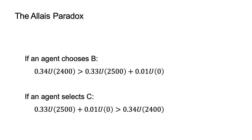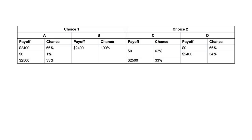Why does this occur? What axiom is being breached? To understand this, I will show you another representation of the choices in this table. The left half of the table shows the bets for choice 1 and the right half for choice 2. Within each choice, the bets are represented as payoff-chance pairs. For example, I can read from the table that bet A involves a 66% chance of $2,400, a 1% chance of $0, and a 33% chance of $2,500.